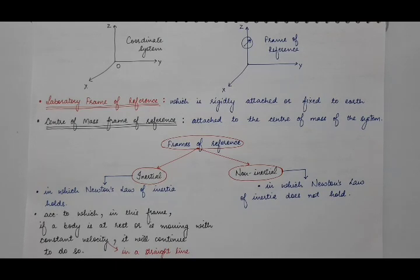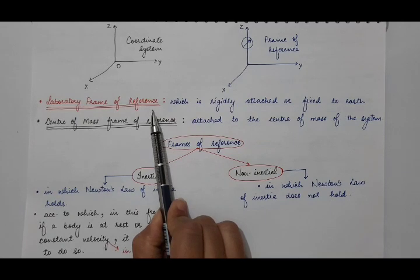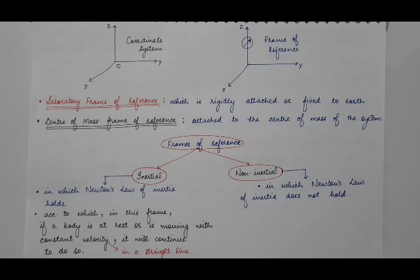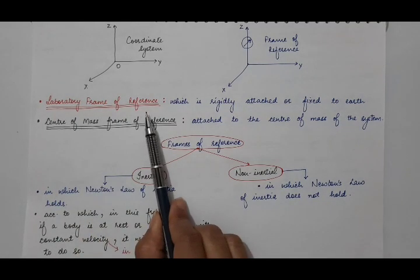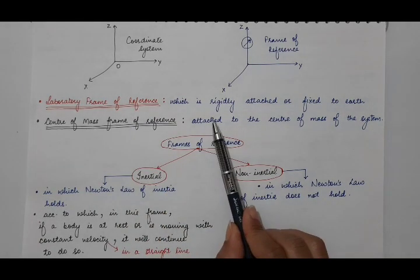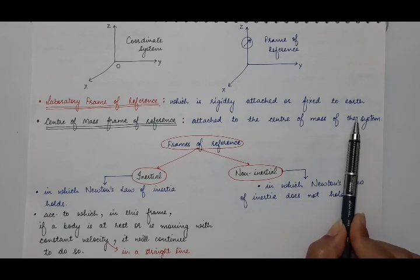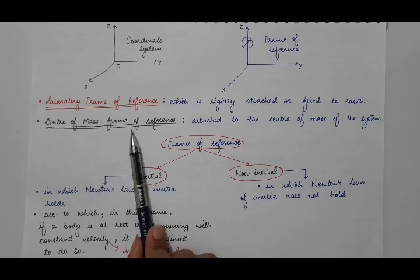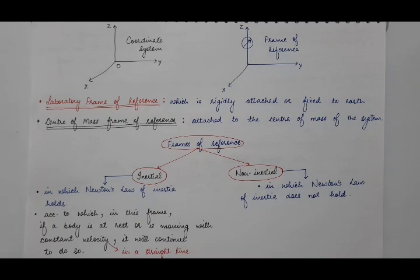There are lab frames of reference as well as center of mass (CM) frames of reference. The laboratory frame of reference is the frame which is attached to or fixed with respect to earth — it is the frame in which all experiments are performed. The center of mass frame is the frame of reference which is attached to the center of mass of the system on which we are performing the experiment.